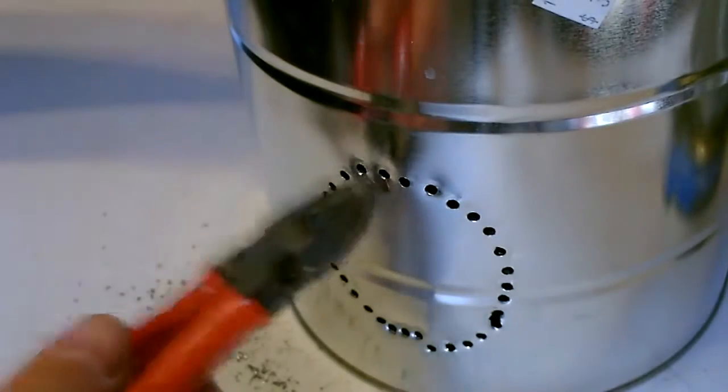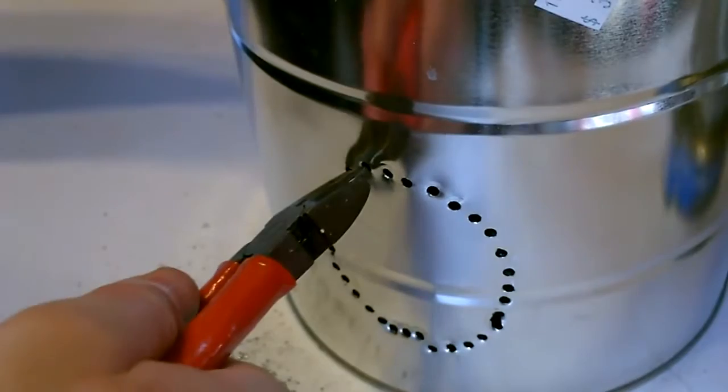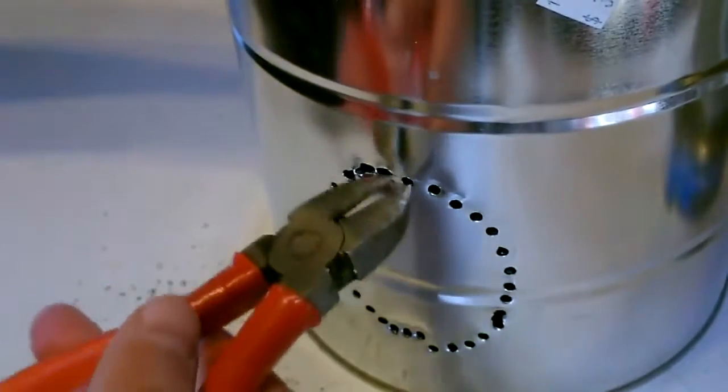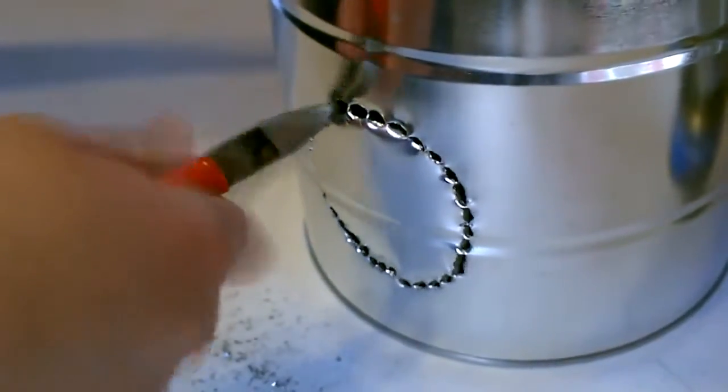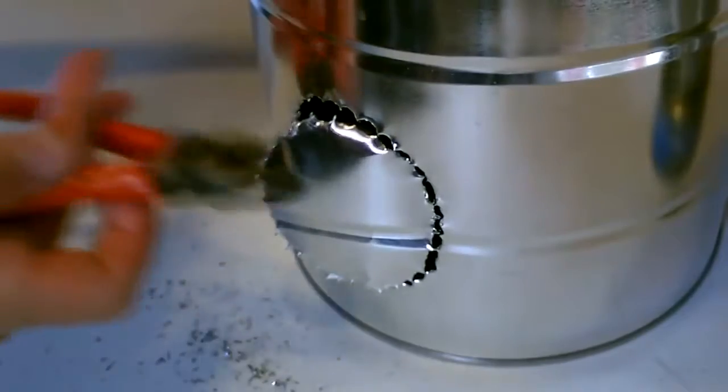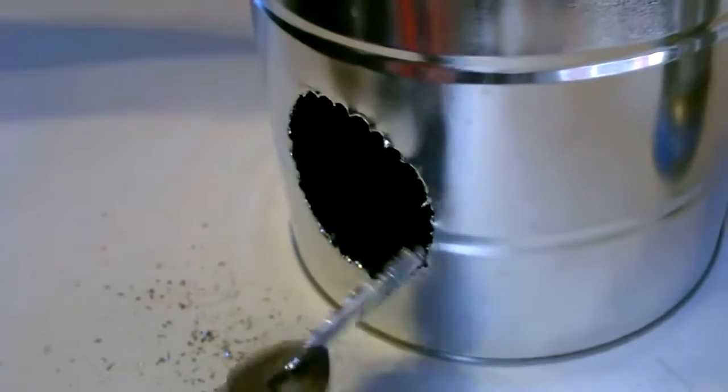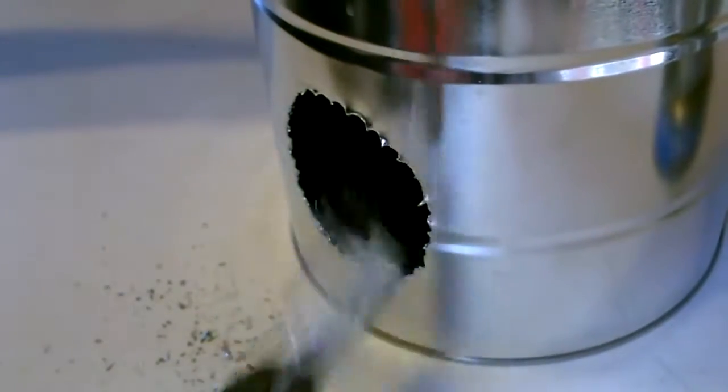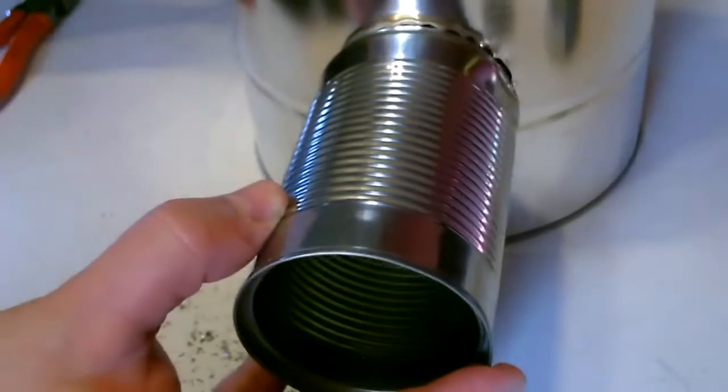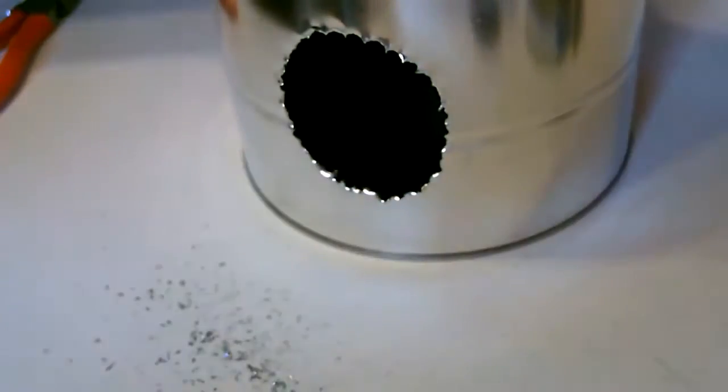Now we're just going to pop this out. Just use pliers like this. Grab in between the sections. You can see it doesn't fit yet but I'm going to smooth this out and then the can will pop right in.